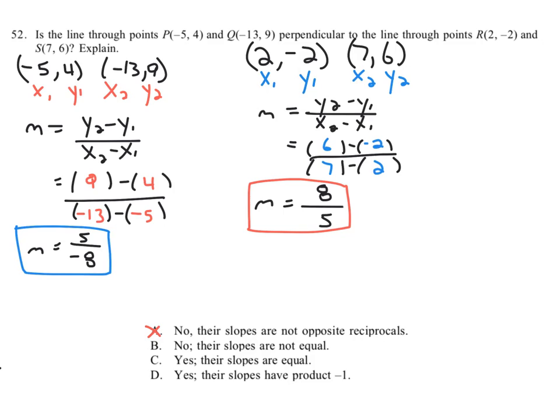And so what do we have for an answer? Are the lines perpendicular? No, their slopes are not opposite reciprocals—they actually are. No, the slopes are not equal. That would be for parallel lines. Yes, their slopes are equal. No, that's not what we're dealing with. That's for parallel lines. And it says, yes, their slopes have a product of negative 1.